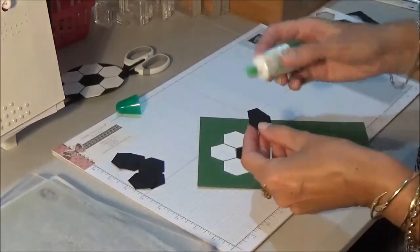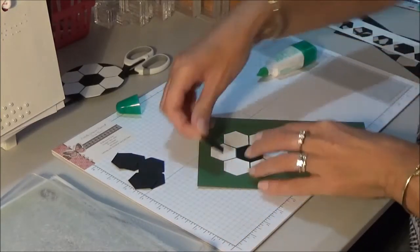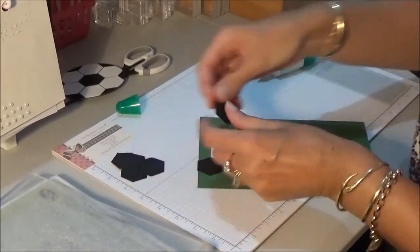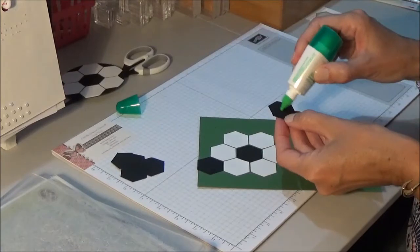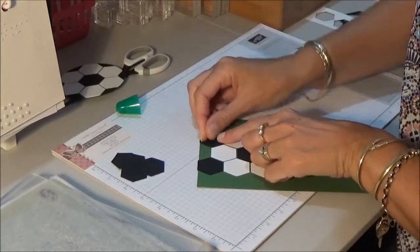So once you've gone around with the white ones, then you're going to come in with the black. You're just going to pop two of them at the top. Like that.